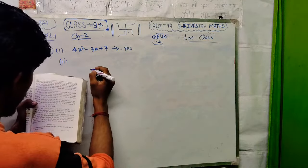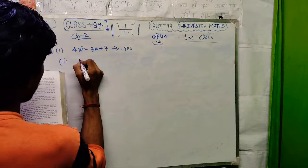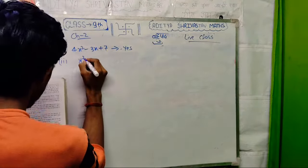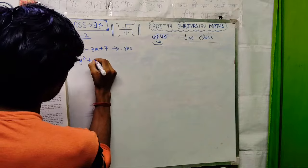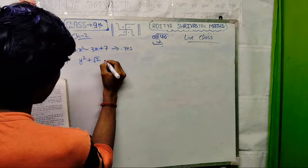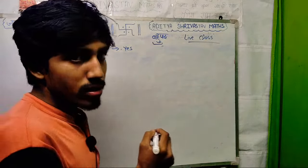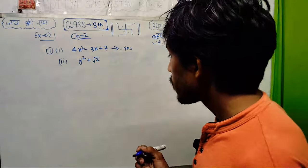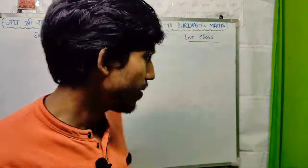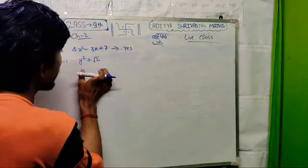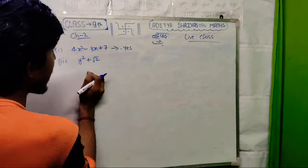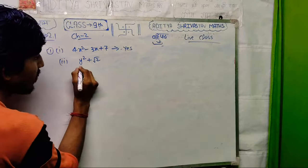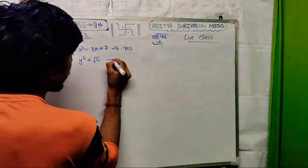Second. Now let's say y squared plus root 2. Is this one variable? Yes, it is. Is this one variable? Yes, it is. Is this one variable? Yes, because you are showing only y. And you are showing only y. And you are showing only y. So this is also done — write yes.